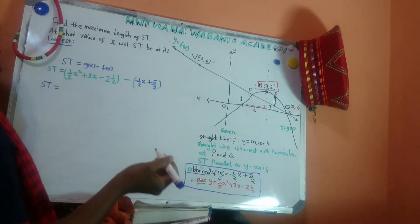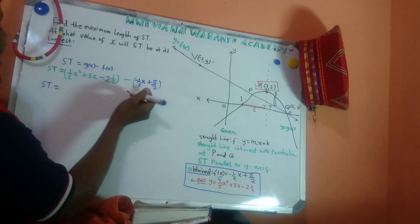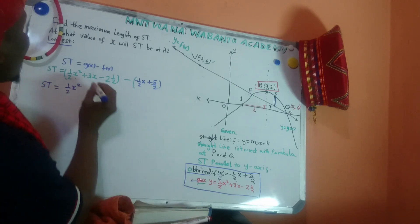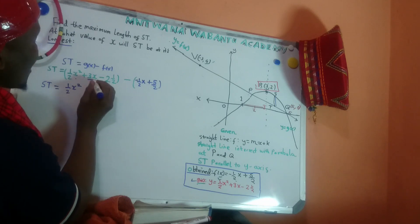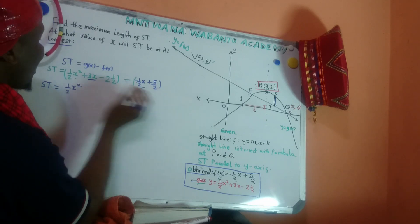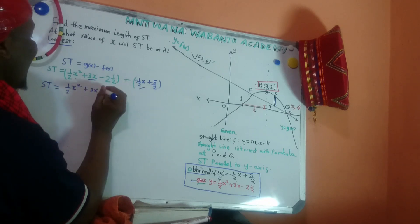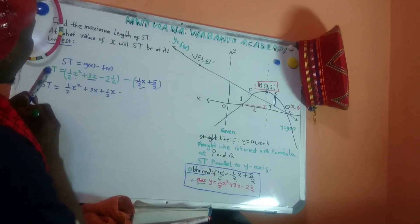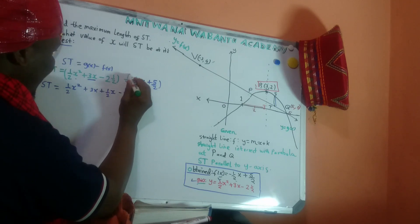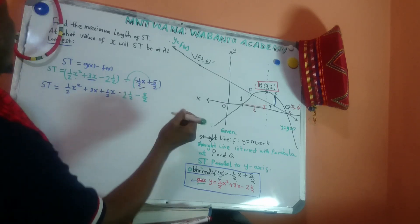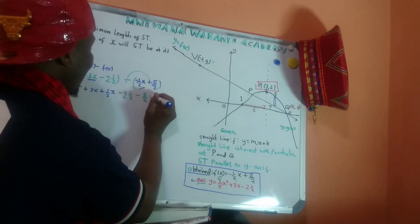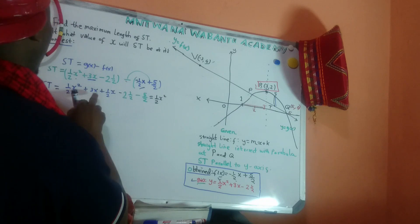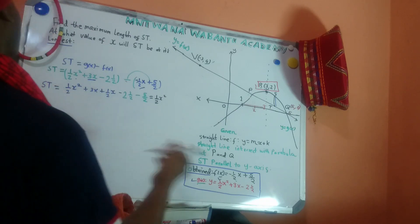Let's simplify. HT equals G(x) minus F(x), which gives us: the x-squared term stays as a half x squared. For the x terms, we have 3x plus a half x. For the constants, we have negative 2 and a half, and we're subtracting negative 5 over 2.